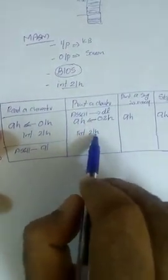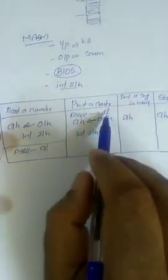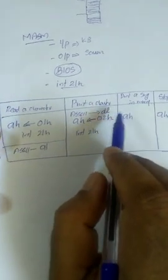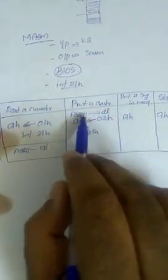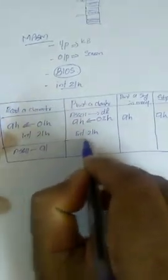Once the BIOS sees the interrupt triggered using INT 21H and sees the parameter 02H, it identifies that it needs to print a character on the screen. It will search the DL register for which character to be printed. The ASCII code of the character I want to print should be saved in the DL register before calling INT 21H with parameter 02H.